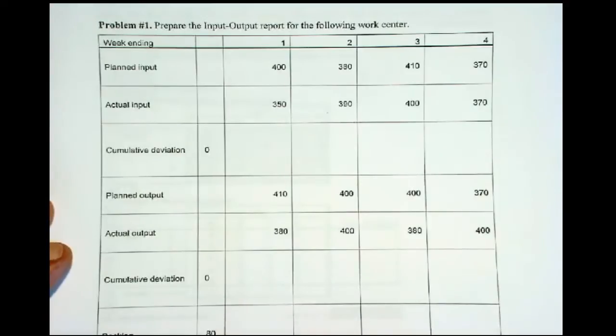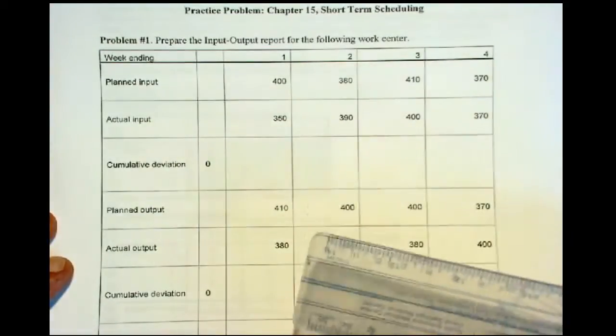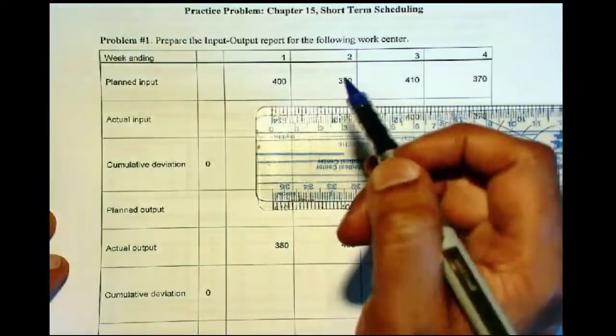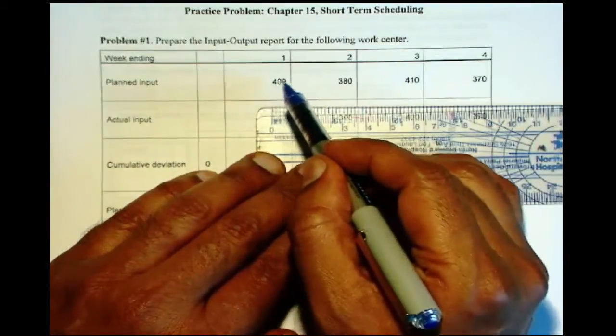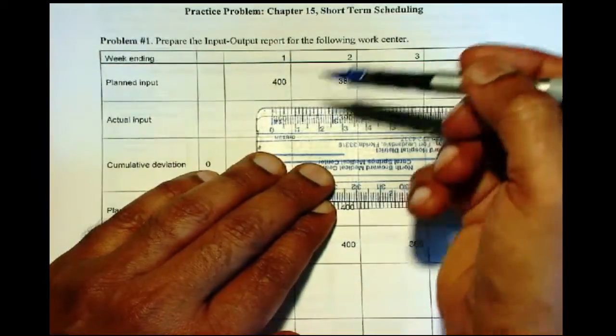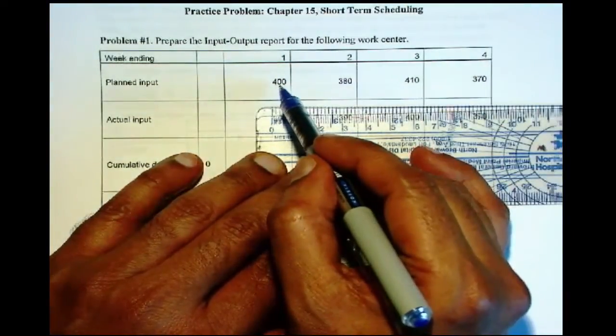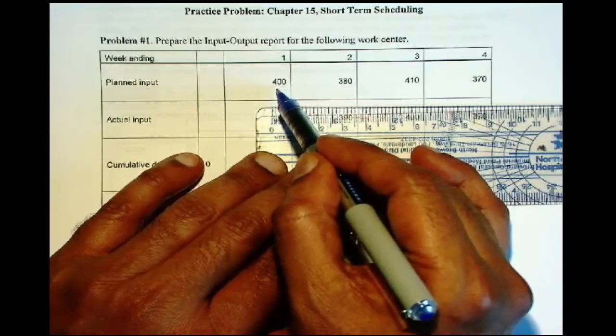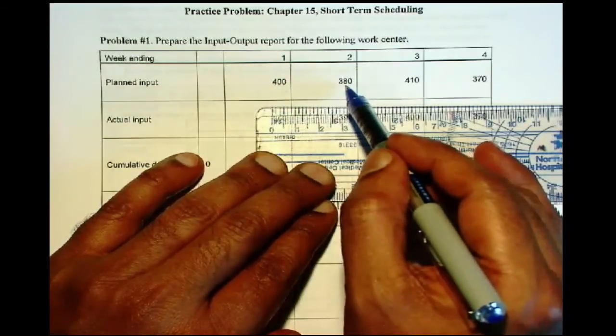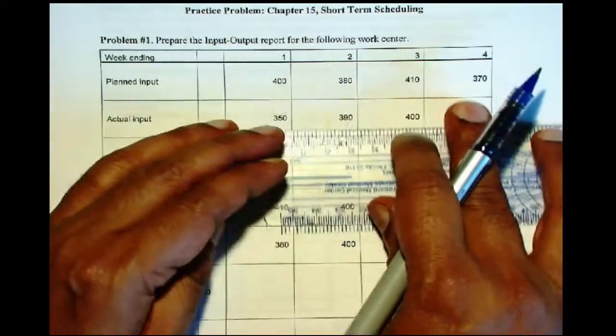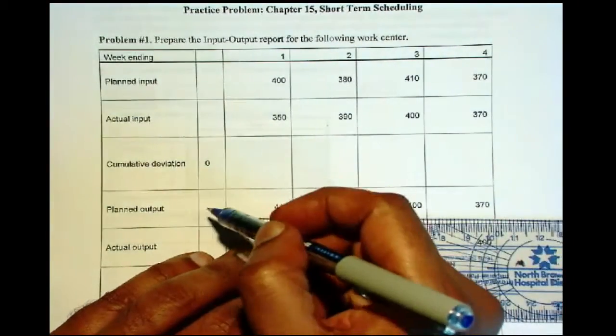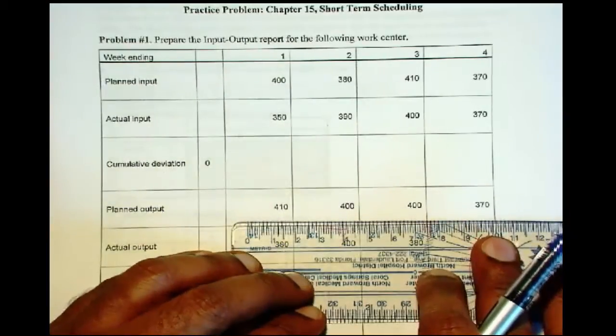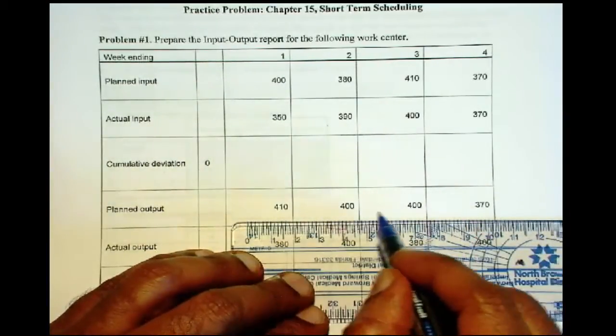At any given point in time, you'll have planned values. So you'll have planned input, jobs coming in. These may be in machine hours - 400 hours of job are expected to come in in week 1, 380 in week 2, and so on. And similarly, here you have the planned outputs that are expected to come out of the workstation for each of the weeks.